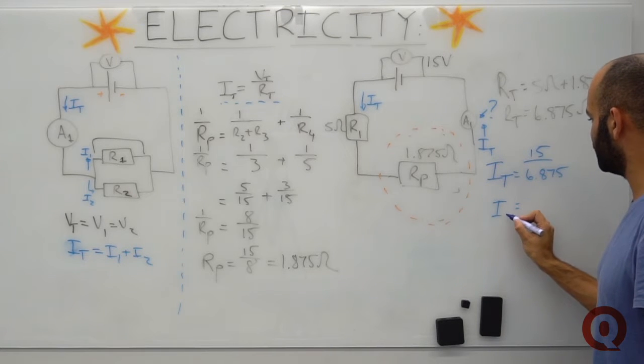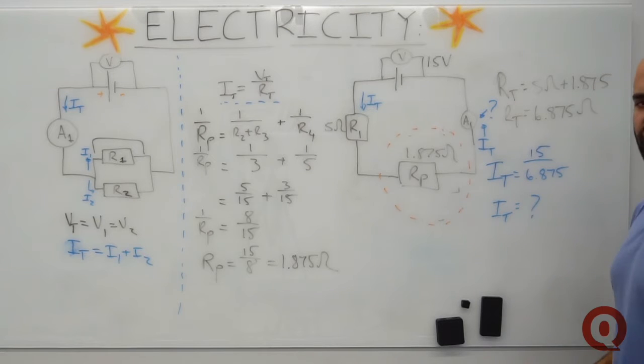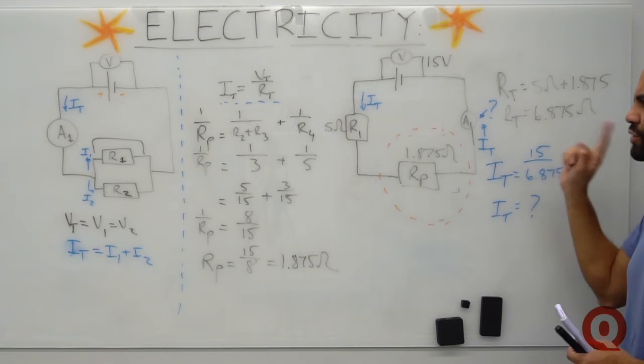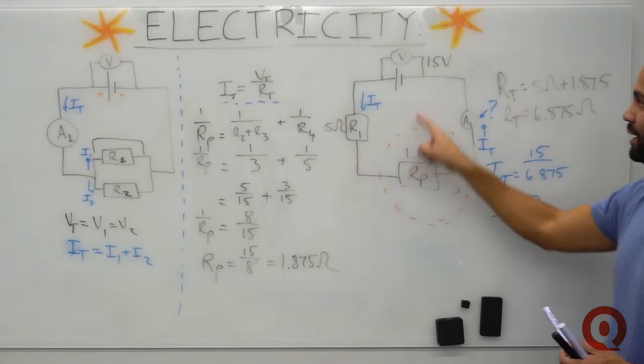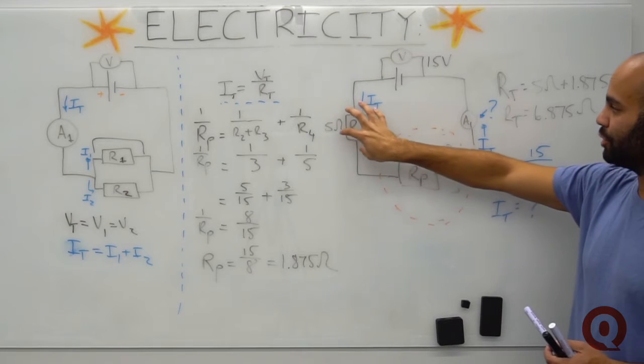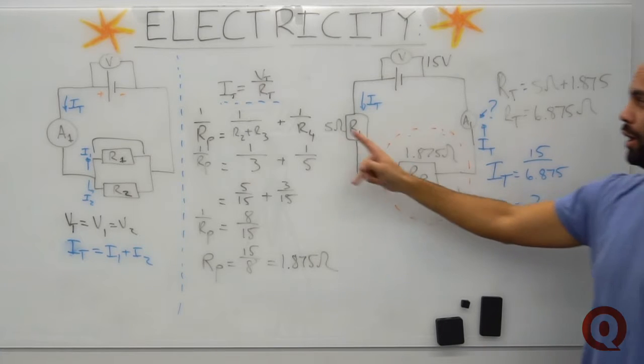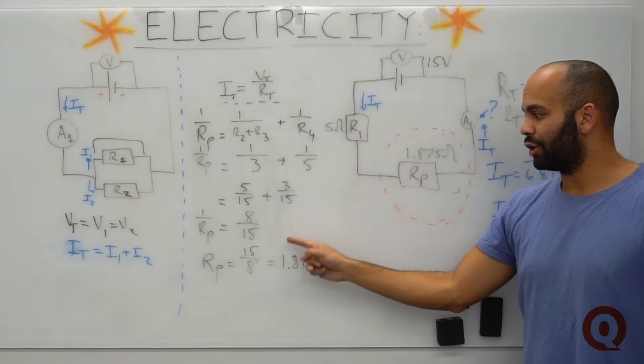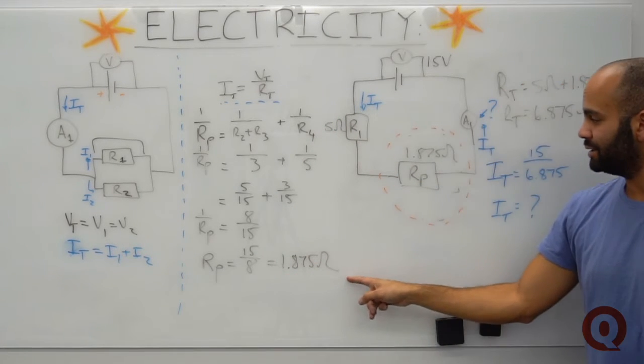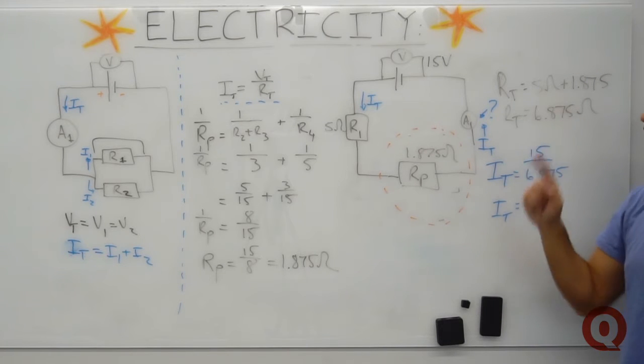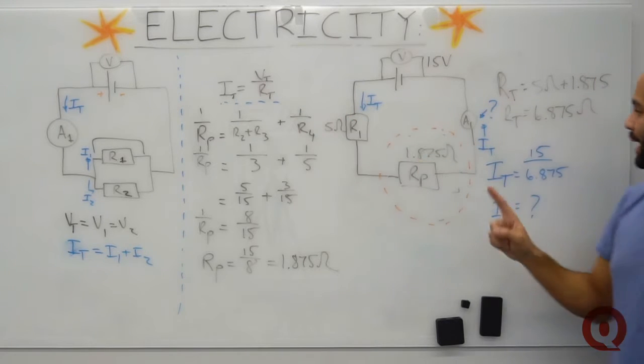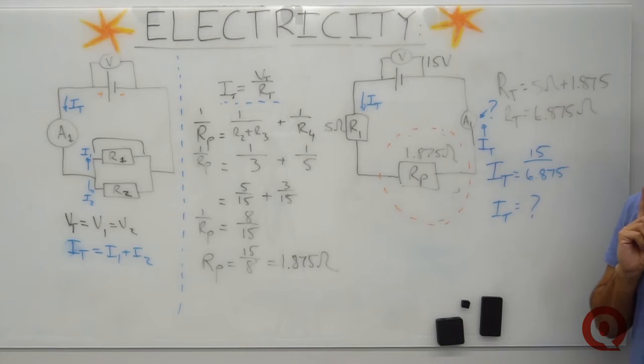And the last step that I need to do, I can say that the total current, remember I'm using this equation, the total current IT is equal to, what's the total voltage that's been given? 15 volts divided by 6.875 ohms. So IT would be equal to, go ahead, punch that in on your calculator, tell me what it is, put it into the question. And now you've got it, because you've taken the fundamentals of understanding the circuit, each component as a resistor, which is in series or in parallel, modeling it and converting it to an effective resistance, and then using Ohm's law and calculating the total current of the circuit. Not that bad, right?